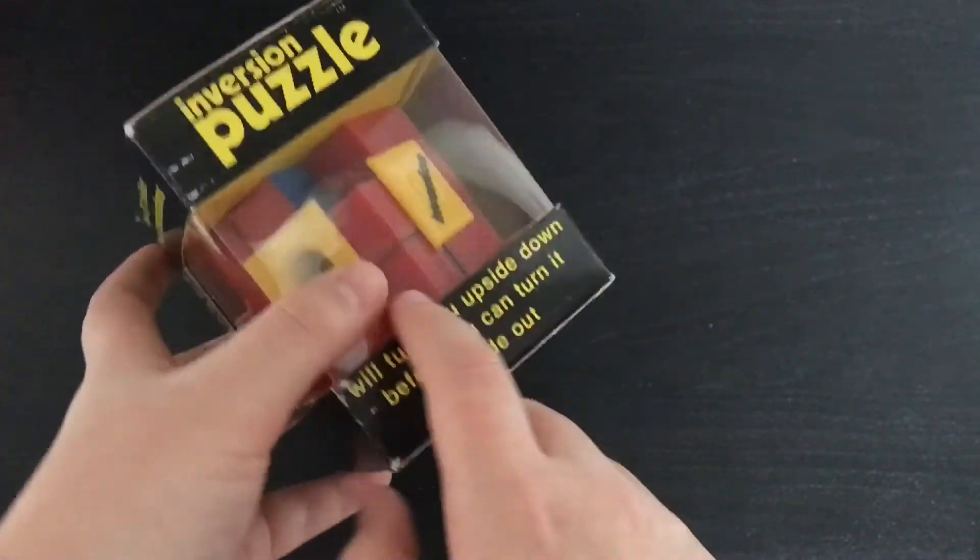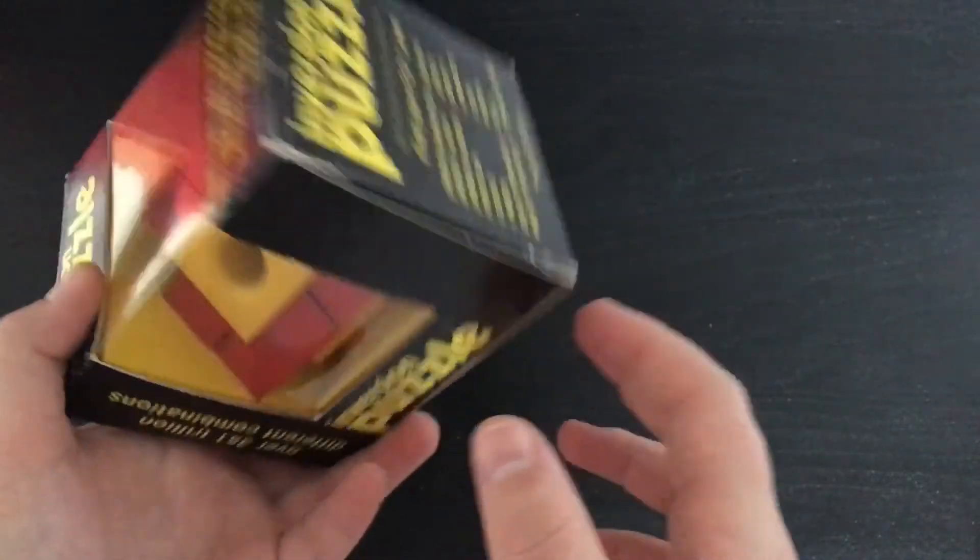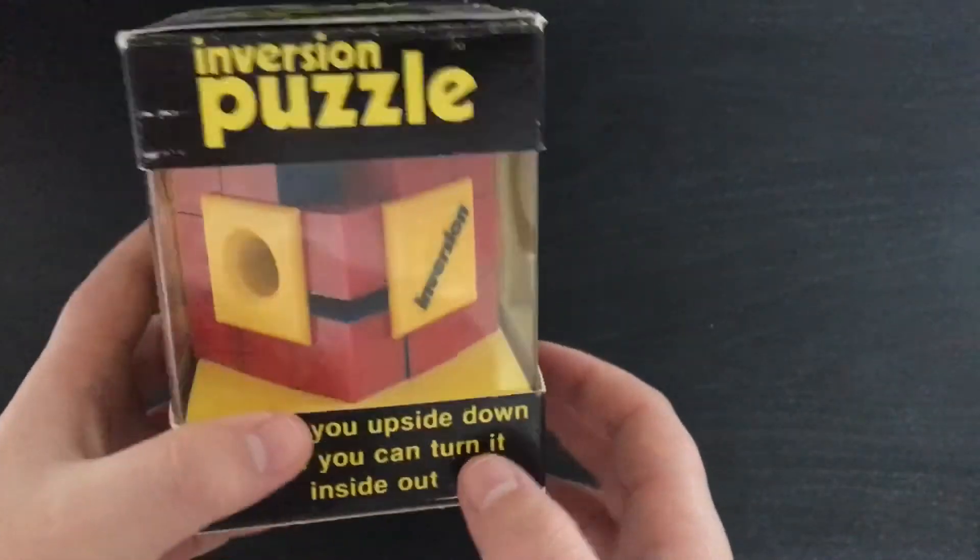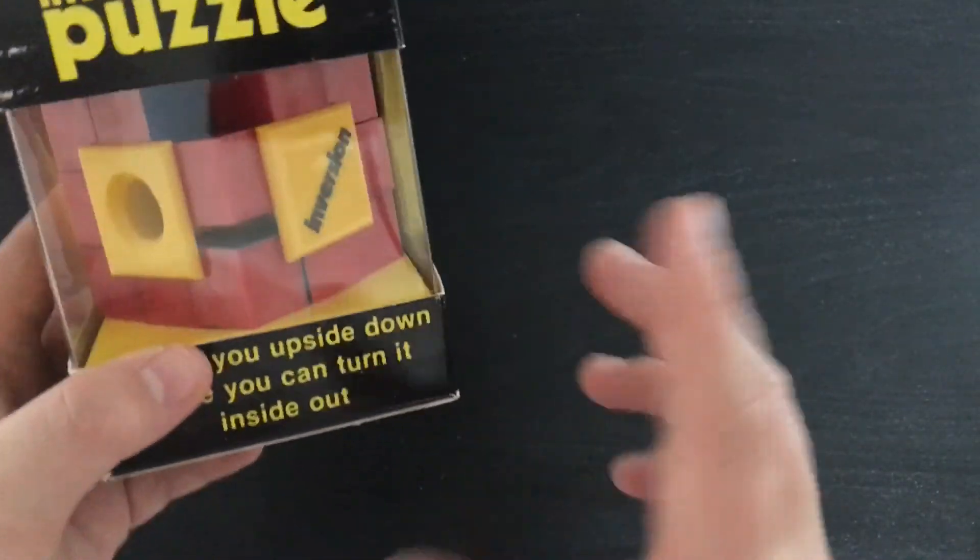And I also have this 1980's inversion puzzle which has its original box. I have taken it out just to see what it does and basically all these pieces on it just slide up and down. So as you can see they just kind of slide around and the goal is all those pieces have a blue side and the goal is to make the cube blue instead of it being red.